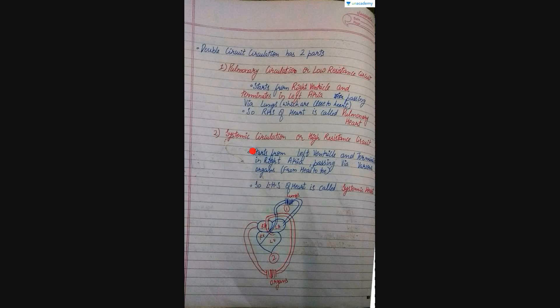Now we can see systemic circulation. Systemic circulation is the high resistance circuit because the blood has to traverse all over the body, while in pulmonary circulation it is low resistance because the lungs are very near to the heart and there is very less resistance, so it is known as low resistance circuit. Systemic circulation starts from the left ventricle and terminates into the right atrium, and the blood passes through various organs. The left hand side of the heart is also known as the systemic heart.